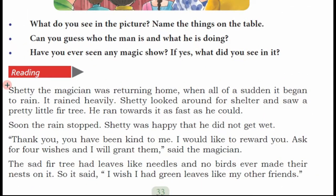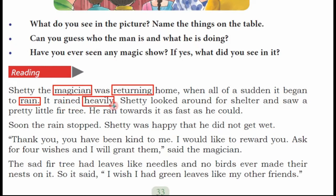Setti the magician was returning home when all of a sudden it began to rain. Setti jadugar ghar lout raha tha — returning matlab lout raha tha. When all of a sudden, achanak se, it began to rain — varsha shuru ho gayi. It rained heavily — bhari varsha hui. Heavily matlab bhari. Setti looked around for shelter and saw a pretty little fur tree. Setti ne ashraya ke liye idhar udhar dekha aur use ek chota sa sundar fur ka vriksh dikhai diya. Shelter matlab ashraya, pretty matlab sundar. He ran towards it as fast as he could — vahe uski aur jitna tej ho sakta tha, bhaaga.